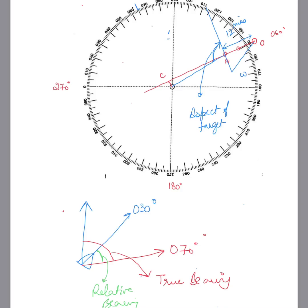I will cover all this in more detail later. Today we learned how to calculate CPA, time to CPA, course and speed of the target, and how to get the aspect of the target. I'll take up more numerical examples in future videos — if I go too fast you won't understand, so let me take more examples in the future. All the best, thanks guys.